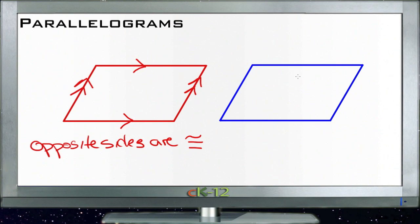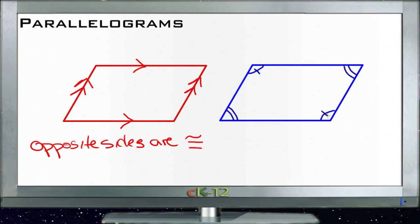Additionally, we can say that opposite angles are congruent. If we take the angle over here on the bottom left and mark it with two arcs, it's going to be congruent with its opposite — the angle up here on the top right. And then this one up here on the top left, marked with a hash mark, is congruent with the one on the bottom right. So opposite angles are congruent.